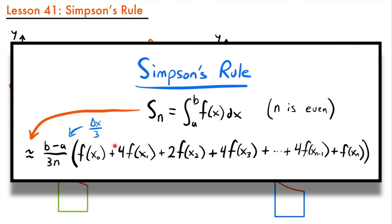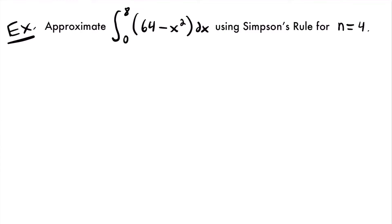Let's look at an example problem where we use this formula to approximate the area under a function. We want to approximate the integral from 0 to 8 of 64 minus x squared dx using Simpson's rule for n equals 4. So we need to approximate the area under the function 64 minus x squared from 0 to 8 using 4 subintervals.